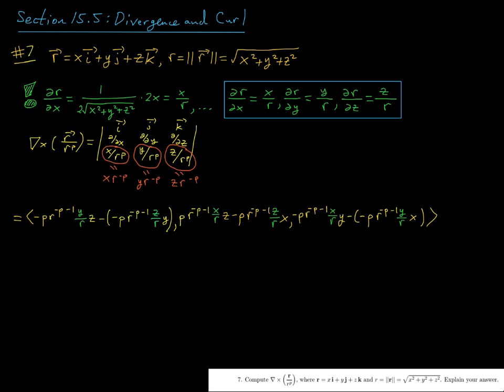A ton. So for the i component, we're deleting out column one and row one, so we're going to take the determinant of this two by two matrix. So we're going to take the y derivative of the quantity z times r to the negative p. Okay, so taking the y derivative, z is constant, so I'm really just taking here the y derivative of r to the negative p, and then I'm just going to multiply by z.